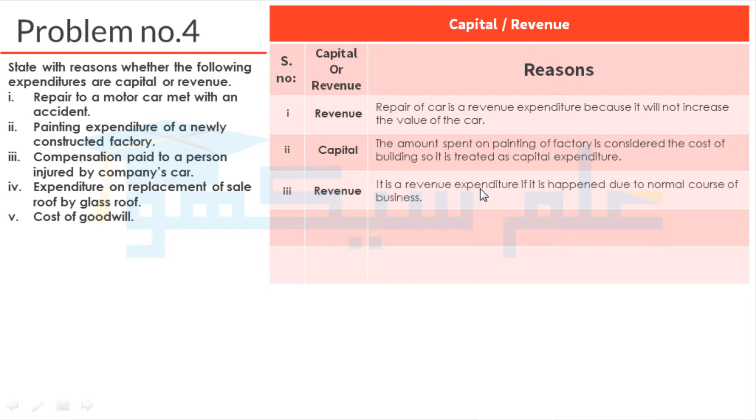The third item — compensation paid to a person injured by the company's car — is a revenue expenditure because it happened during the normal course of business.